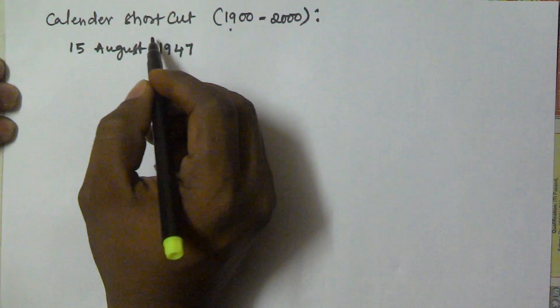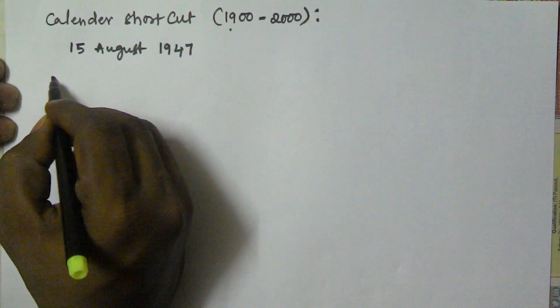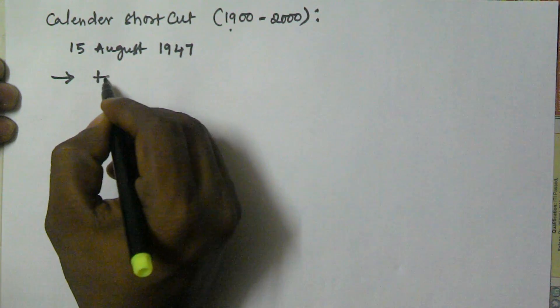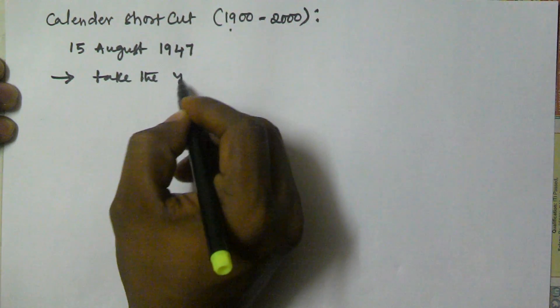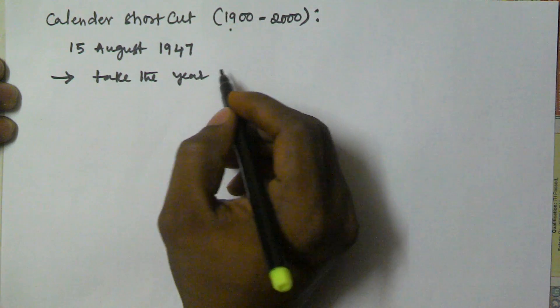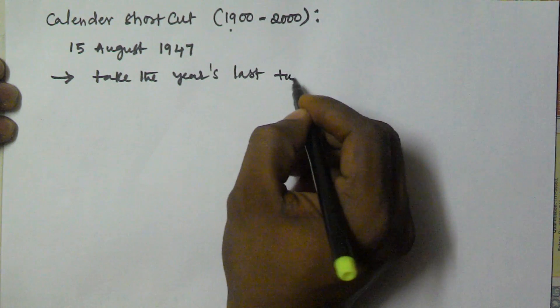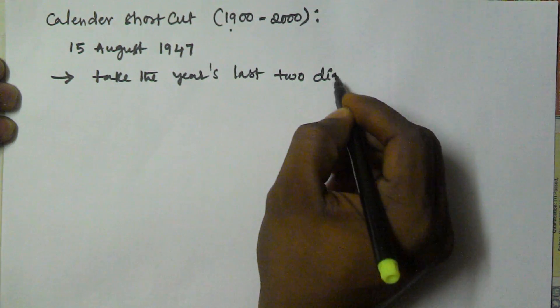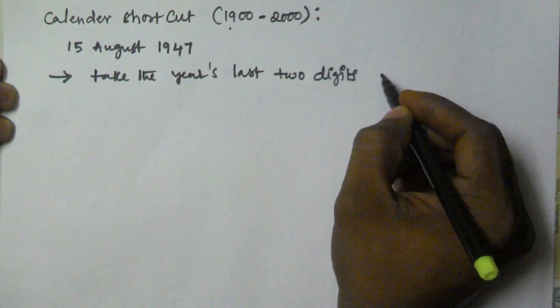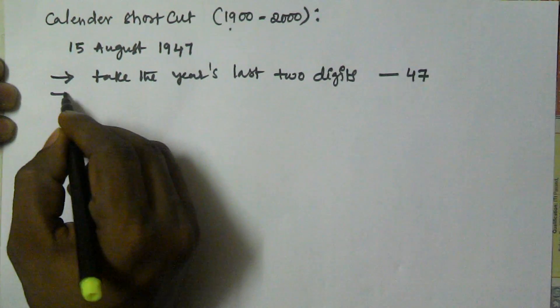The shortcut contains some steps. The first step is take the year's last two digits. So in our case that is 47.